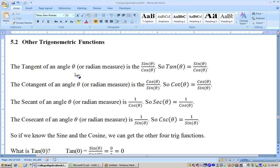Okay, 5.2's on other trigonometric functions. All the other trigonometric functions are defined in terms of the sine and cosine. For example, the tangent is equal to the sine over cosine. The cotangent is the reciprocal of the tangent, and it's equal to cosine over sine. The secant is 1 over the cosine, and the cosecant is 1 over the sine.